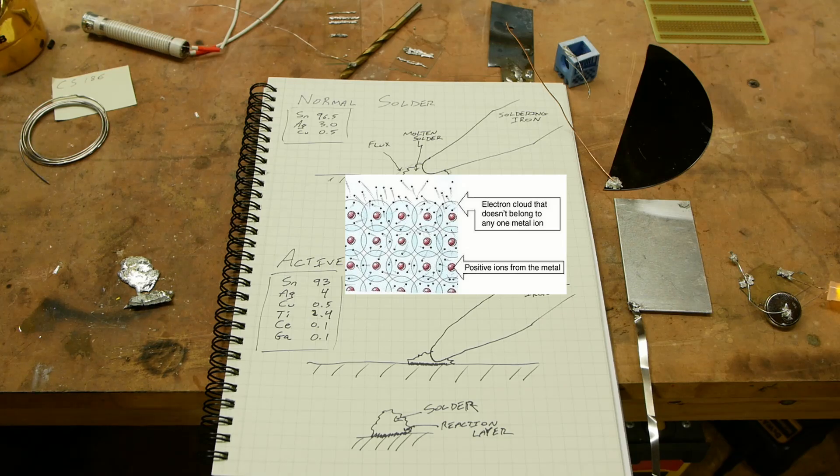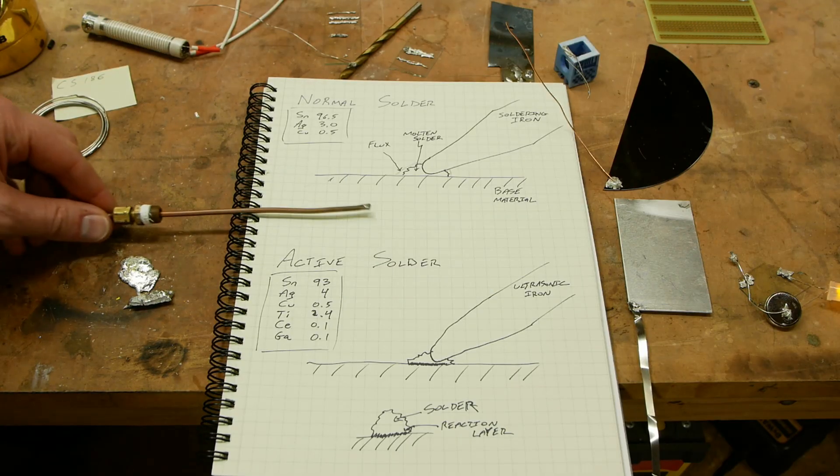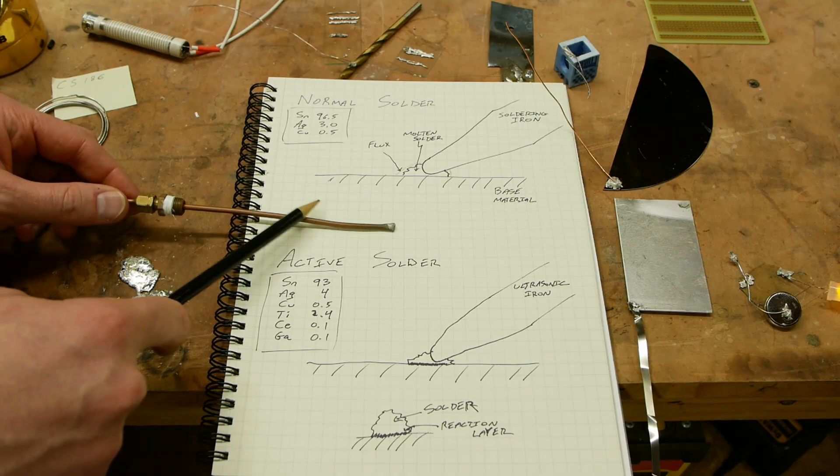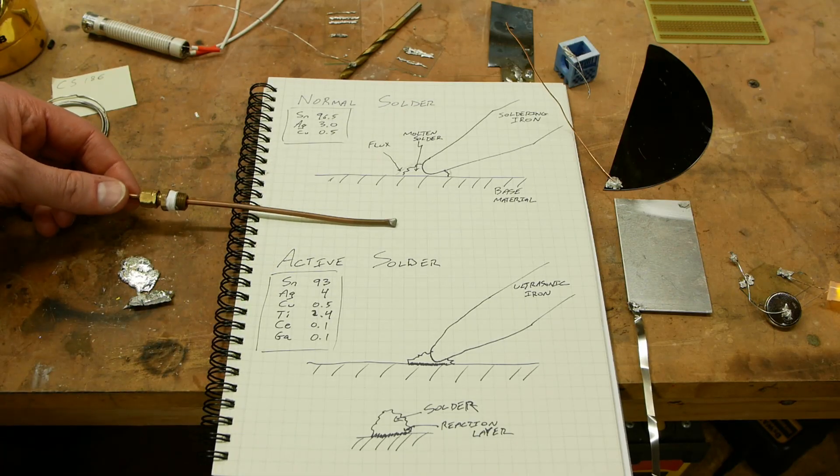So basically, if you get any metals next to each other and you warm them up a bit, they will bond together. The problem is that we live in an oxygen atmosphere here. So if you have a metal laying out, the surface here is not copper. It's actually copper oxide because this thing's been sitting out in the air for a while.